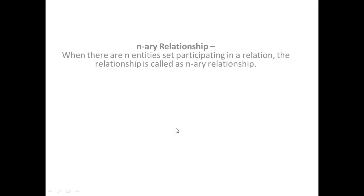Number three is an n-ary relationship. When there are n entity sets participating in a relation, the relationship is called an n-ary relationship. If more than two entities can relate in a relationship, then it is known as an n-ary relationship.